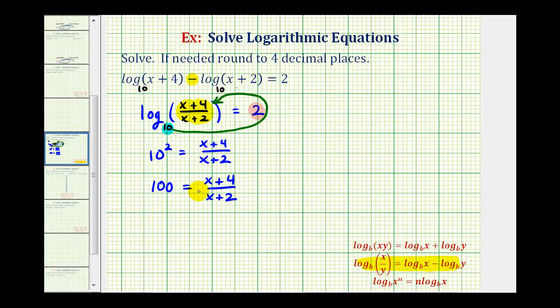Now, from here, we can multiply both sides of the equation by x plus two, or we could put 100 over one. Now that we have a proportion, we can cross multiply, meaning 100 times the quantity x plus two must equal one times the quantity x plus four.